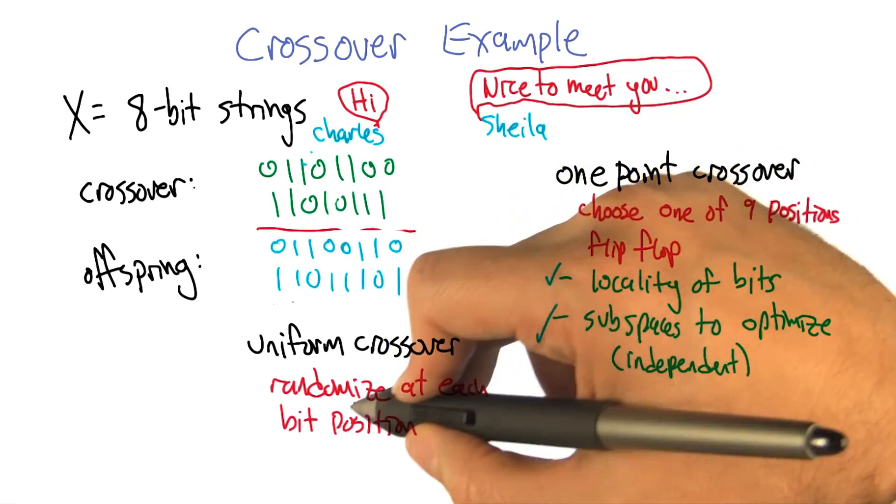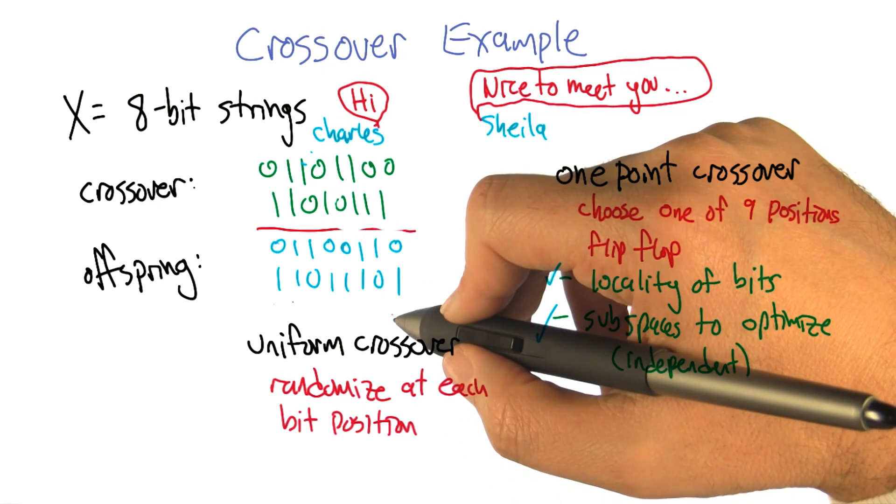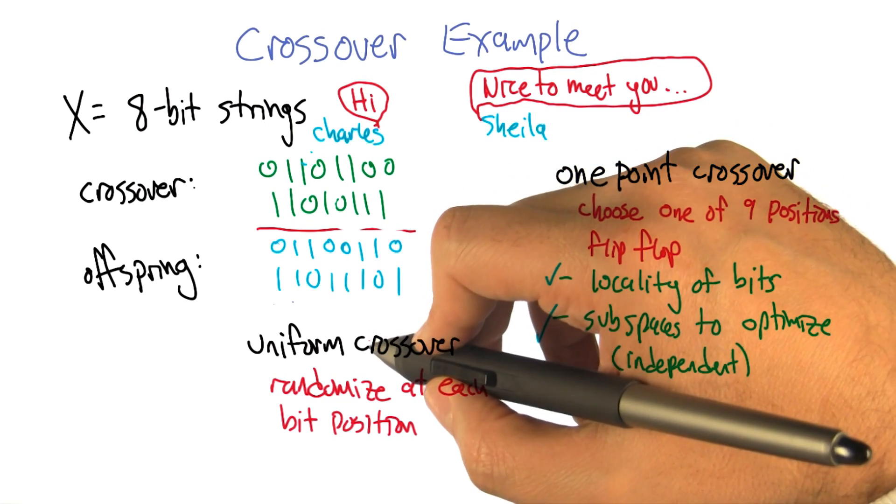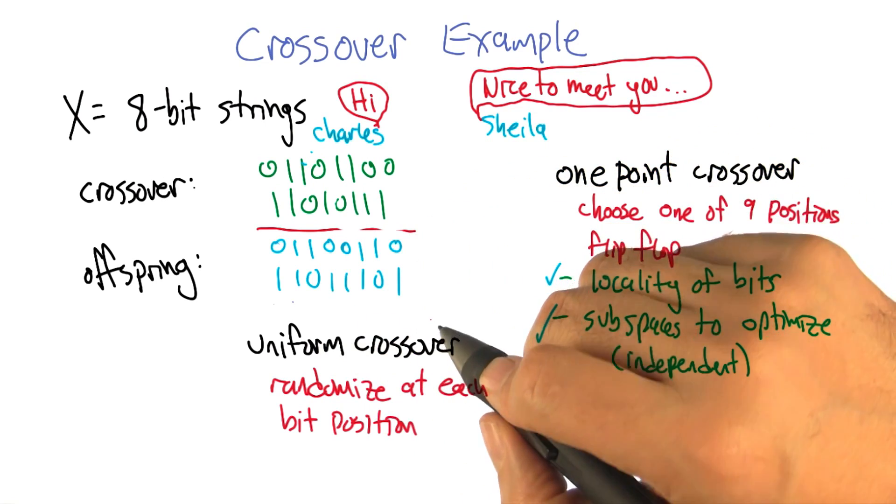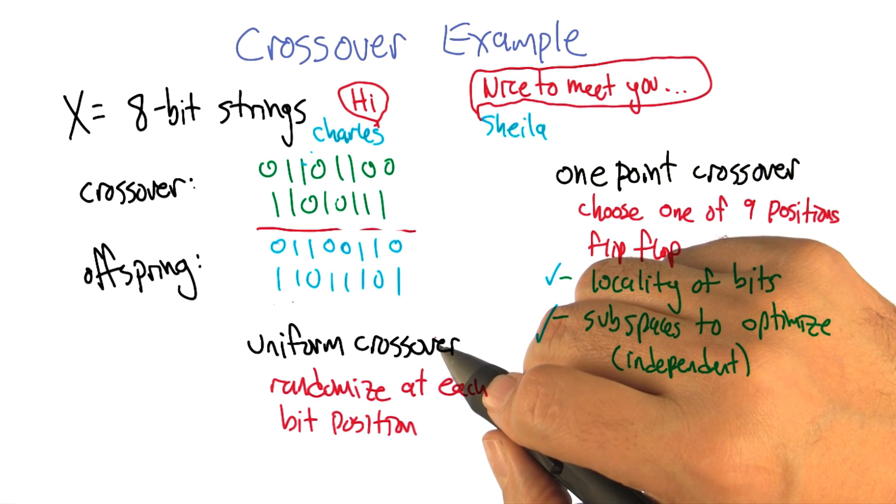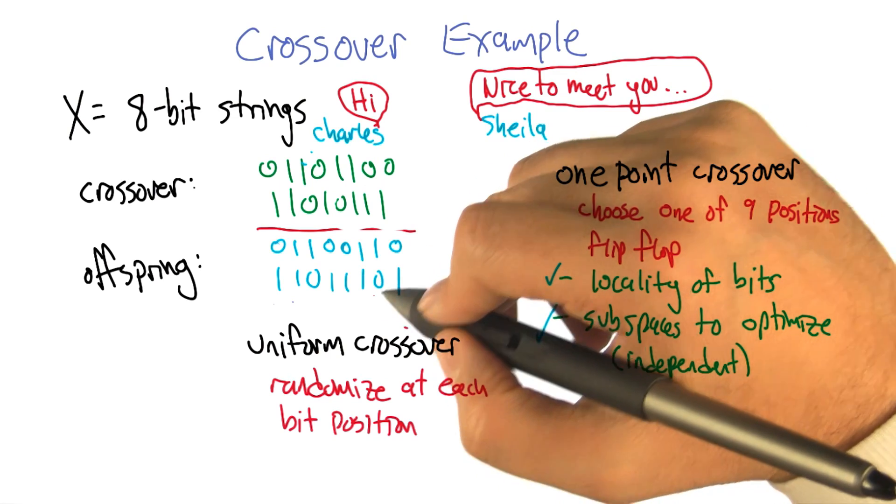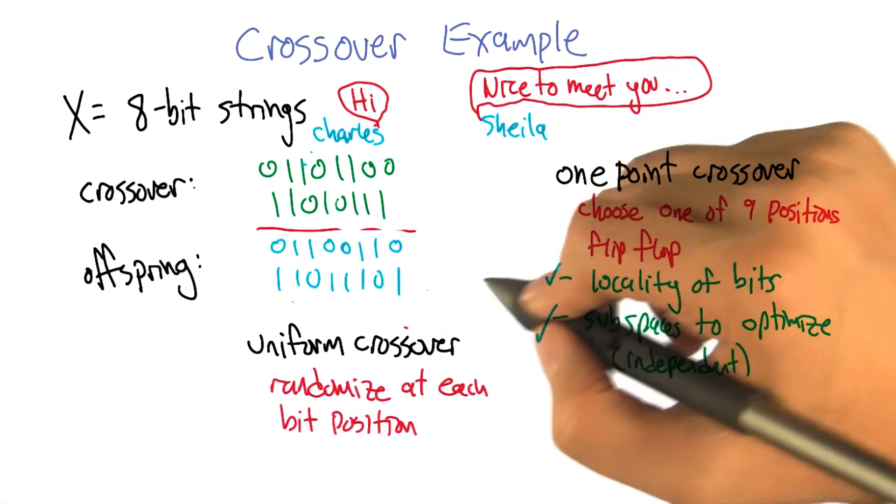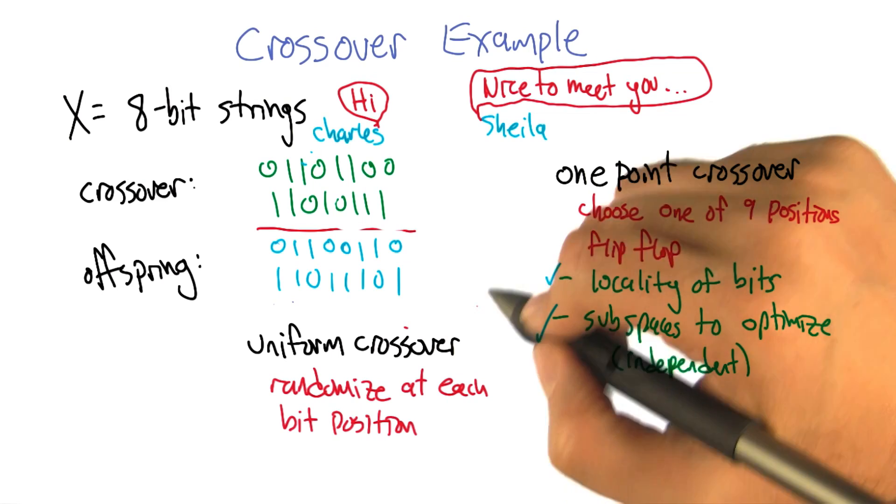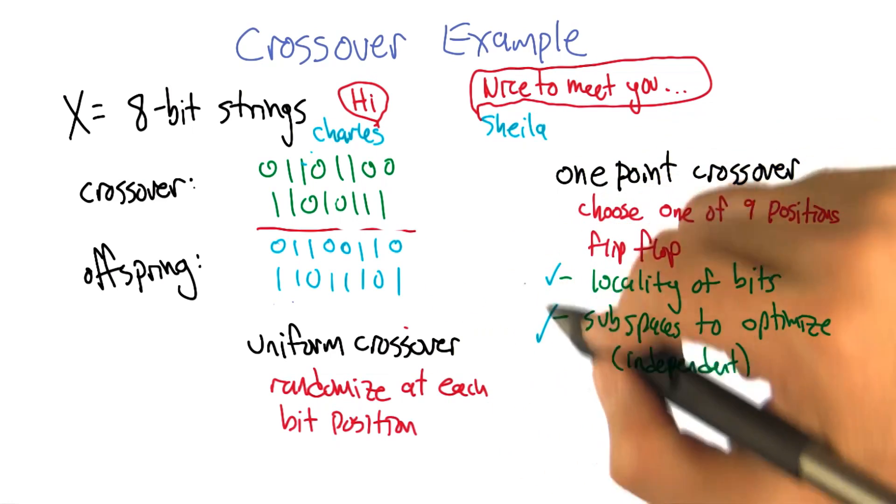Okay. So this idea is sometimes called uniform crossover. And essentially we're just randomizing at each bit position. This kind of crossover happens biologically at the level of genes, right? So we imagine that we get our genes from our parents. But for each different gene, like the gene for eyes and the gene for hair color are not particularly linked to each other, that they're uniformly chosen at each position.